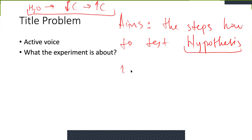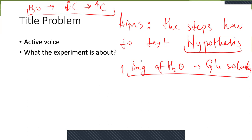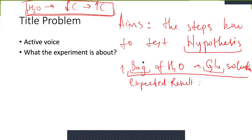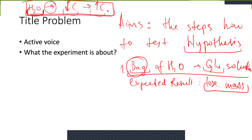In this case, because we have a semipermeable membrane, the bag will not allow the glucose to get in. So what we expect from the hypothesis — the expected result — is that the bag will lose mass. This happens because we hypothesize that water moves from low solute concentration to high solute concentration areas. The expected result comes from the hypothesis. But this is only the first aim. The second aim is to see how the bag changes if we put a high solute solution into the bag and then place the bag into distilled water.